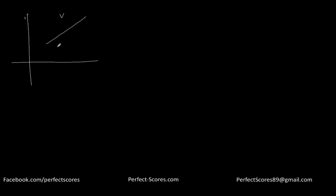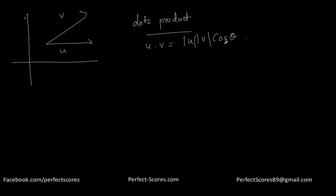To summarize: if you have two vectors v and u, the dot product represented as u·v equals the magnitude of u times the magnitude of v times cos(theta). We use cos(theta) so that v·cos(theta) comes into the same direction as u, giving a scalar result.